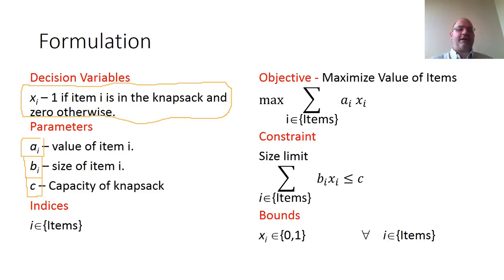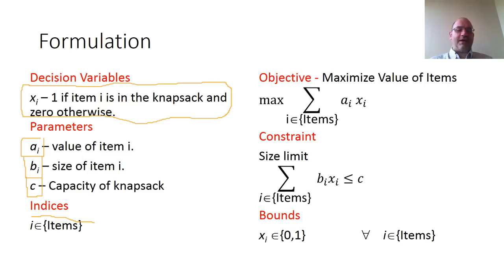You have to have the same units of measure for the size of the item, b sub i, as the capacity of the knapsack. So if your items are in pounds, the capacity of the knapsack has to be in pounds as well. We have one index i, so i is contained in the collection of items, which we can write as x sub i for i contained in items.